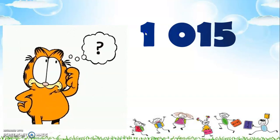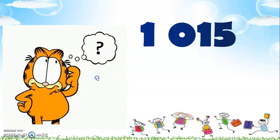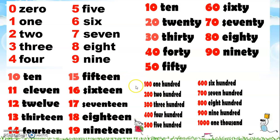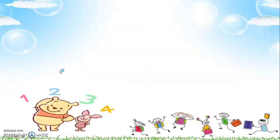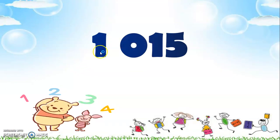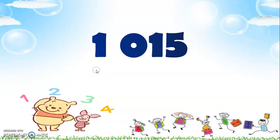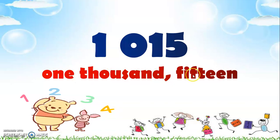Now we have the example one thousand fifteen. As you can see, the one is separated from zero and fifteen, and we write one thousand this way. To write it in words, we look for the word one thousand, and then we look for the word fifteen. It's one thousand fifteen — and notice there's a space, then one thousand, comma, then fifteen. That's how you write one thousand fifteen.